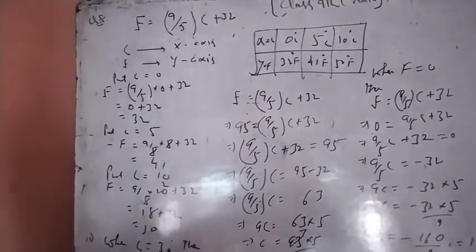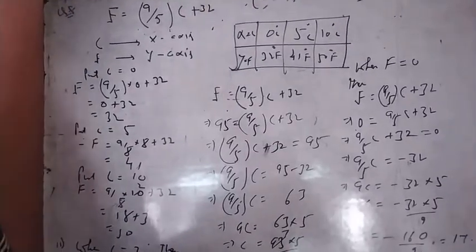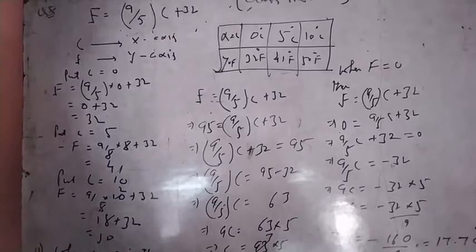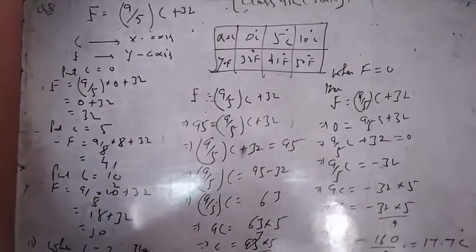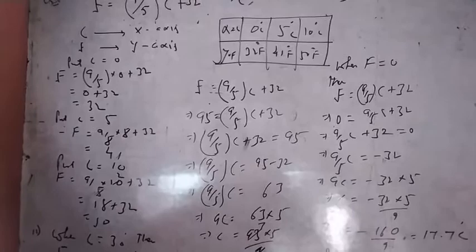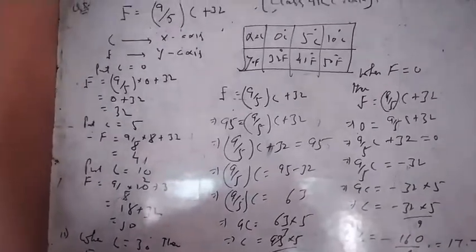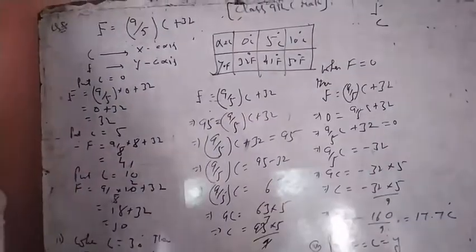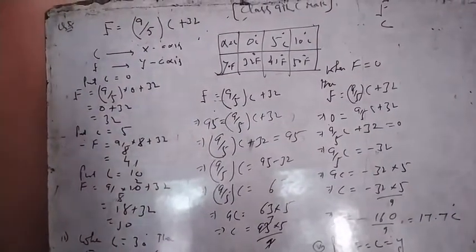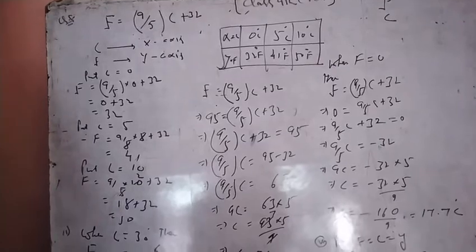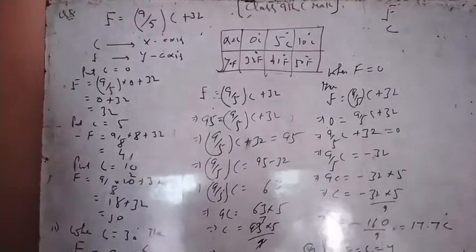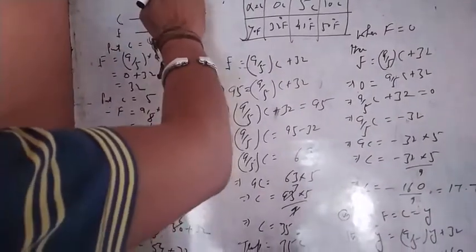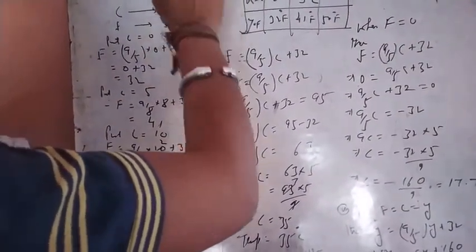So today, the last question is: In countries like USA and Canada, temperature is measured in Fahrenheit, whereas in countries like India it is measured in Celsius. Here is a linear equation: Fahrenheit is equal to 9/5 Celsius plus 32.